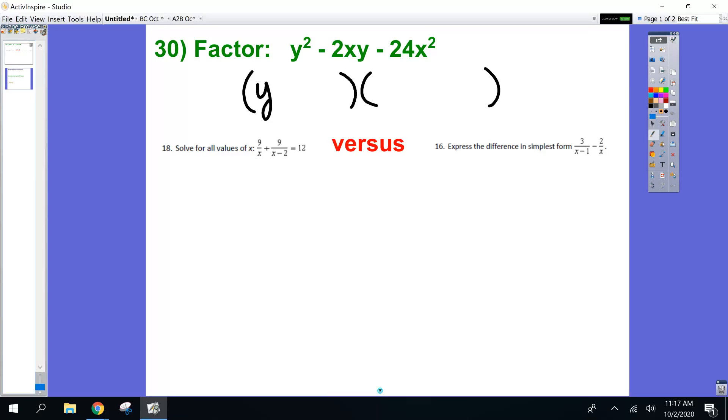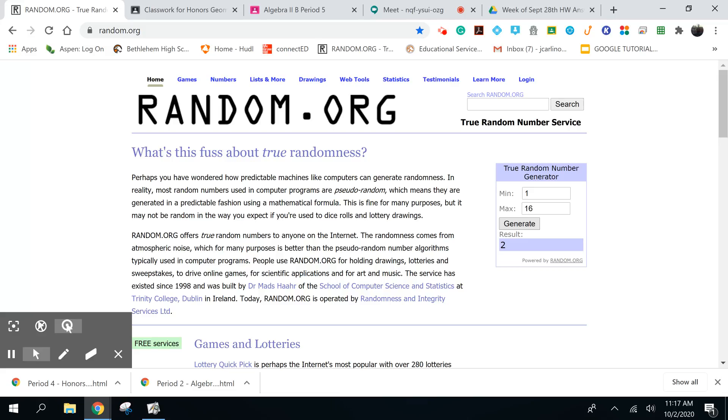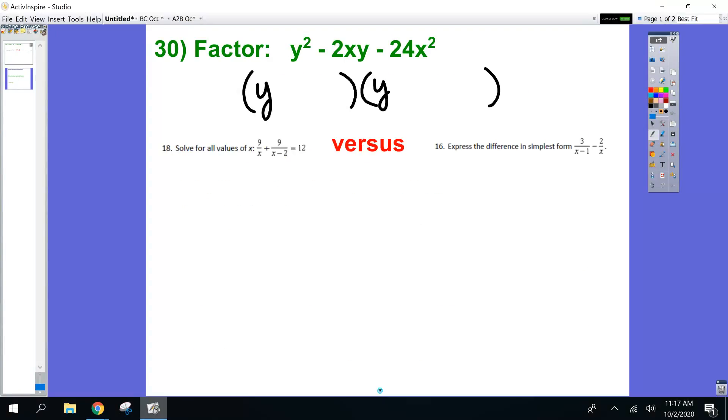When you're dealing with three terms and the number out in front is one, you can do the whole multiplies to this and adds to this. Multiplies to your C, adds to your B. So I'll put my Y's here so I get Y squared. Now you guys come up with the numbers I need based on what you see in the problem. What are my two numbers that multiply to this and add to this?